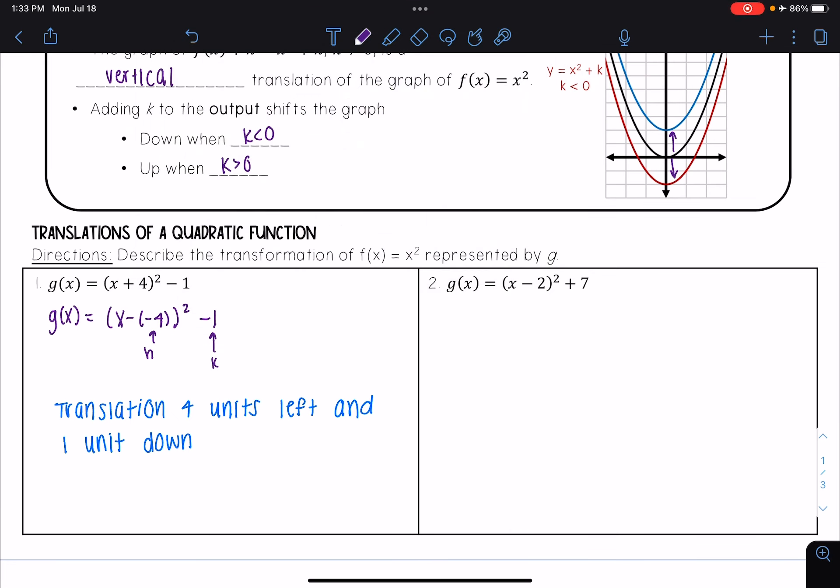Let's look at another one. Here I have g(x) = (x - 2)² + 7. First I'm going to identify what my h is and what my k is. I see here that h is 2 because I already have that subtraction in there.